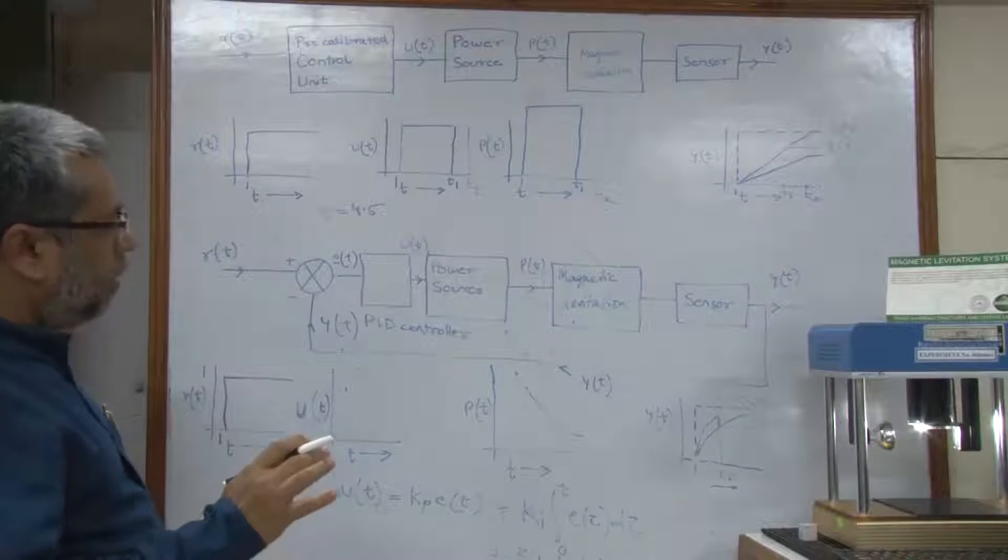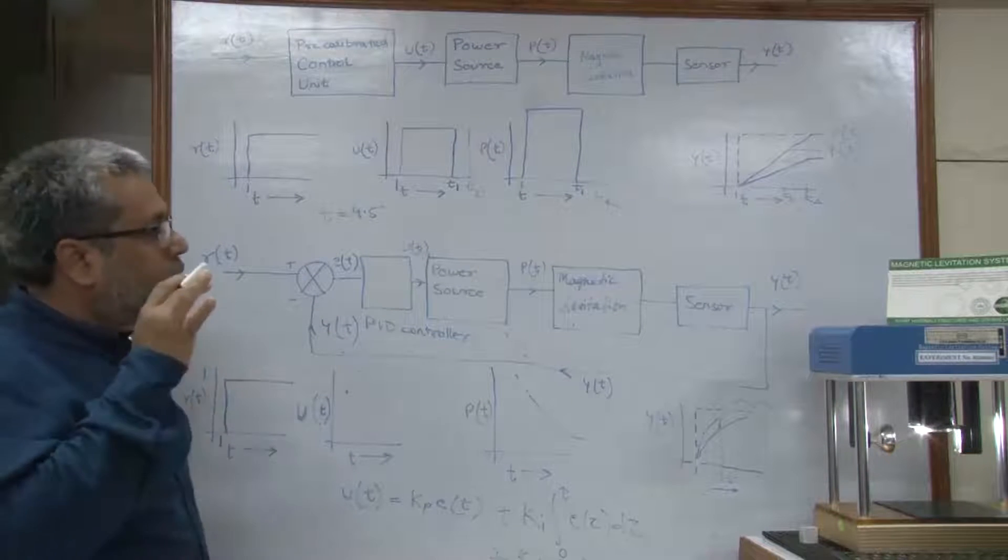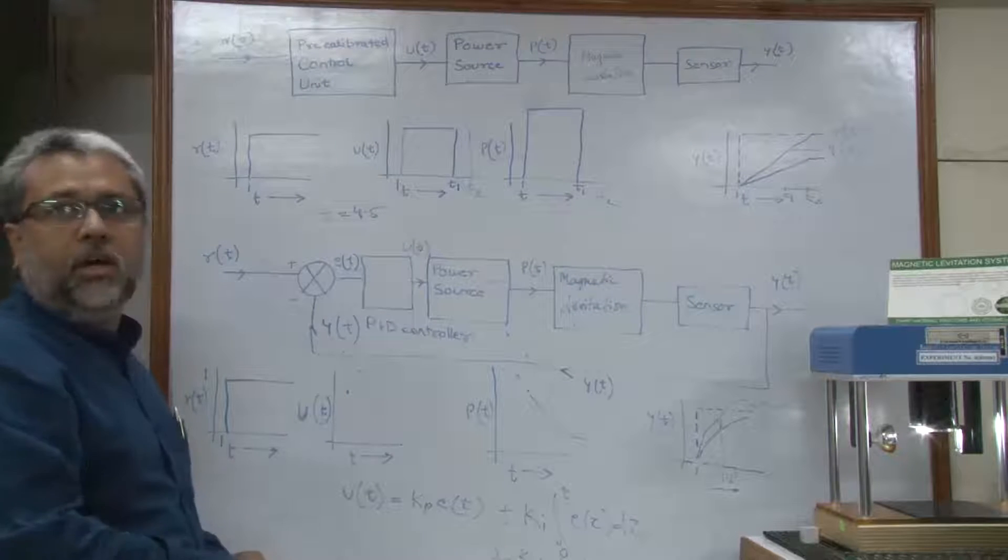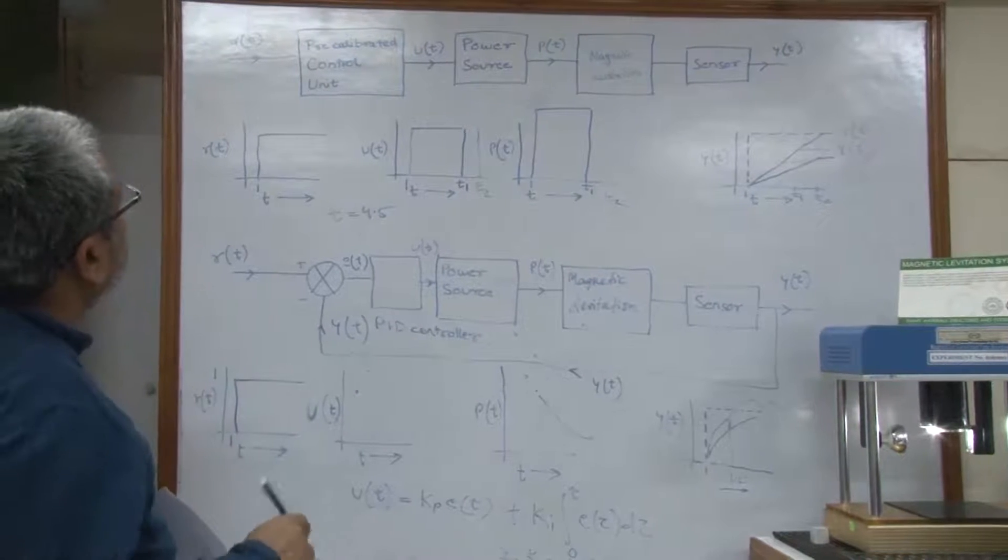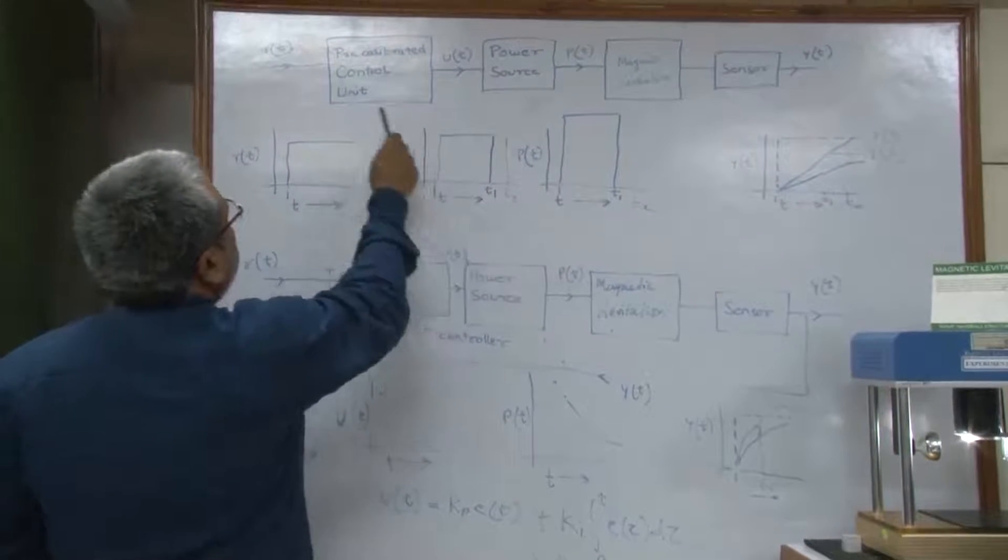What we have here is a system, a practical system where we can demonstrate how a PID controller can be designed. Now in this system, as you can see, if it is an open loop system then you have a reference signal, then a pre-calibration control unit, and it goes to a power source.